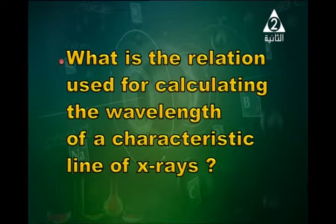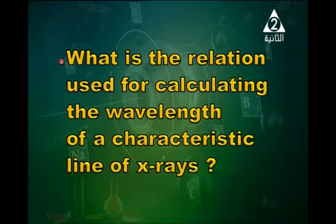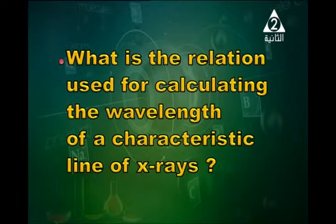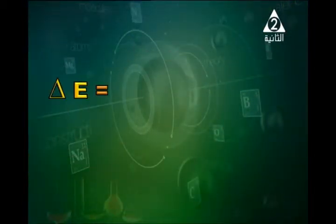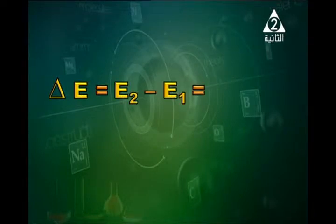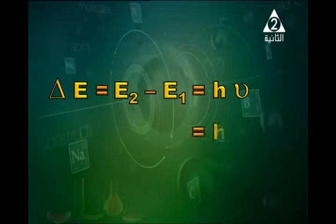What is the relation used for calculating the wavelength of a characteristic line of X-rays? The difference in energy levels equals E2 minus E1, and it equals h·ν. Since ν can be replaced by c/λ, we can calculate the wavelength λ.